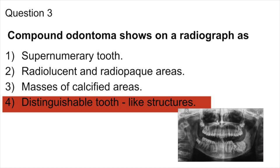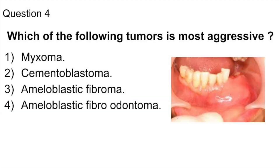In compound odontoma, the involved tissue resembles the normal tooth. In complex odontoma, the tooth has no morphological similarity with a normal tooth. So the answer is distinguishable tooth-like structures.